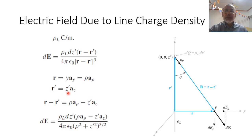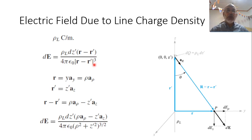The source vector r′ is Z′ in the Z-direction, so r − r′ equals ρ in the ρ-direction minus Z′ in the Z-direction. The amplitude |r − r′| is the square root of ρ² + Z′². Therefore |r − r′|³ equals (ρ² + Z′²)^(3/2).